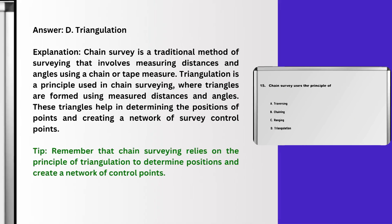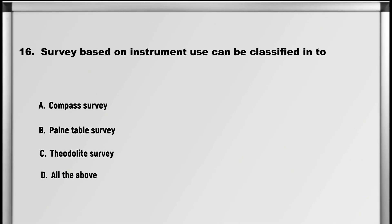Tip: remember that chain surveying relies on the principle of triangulation to determine positions and create a network of control points. Let's move on to question number 16: Survey based on instrument use can be classified into: A. Compass survey, B. Plane table survey, C. Theodolite survey, D. All the above. Answer: D. All the above.